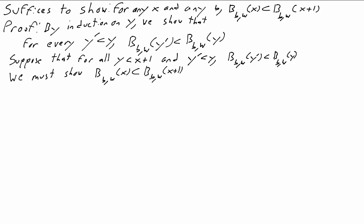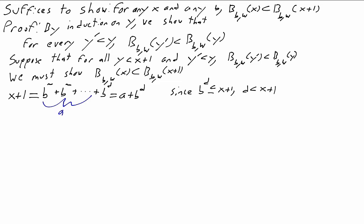It's easiest to look at what happens when we write x + 1 in hereditary base b notation. x + 1 in hereditary base b is going to be some sum of terms b^(this) + b^(that). We're mostly interested in the last term — the one with the smallest exponent. So let's write x + 1 = a + b^d, where a and d are themselves written in hereditary base b notation, and d is the smallest exponent. Notice that x + 1 is at least b^d, so d must be smaller than x + 1. For example, if x + 1 is 5, in hereditary base 2 we have 5 = 2^2 + 2^0, so a is the 2^2 term and d is 0.